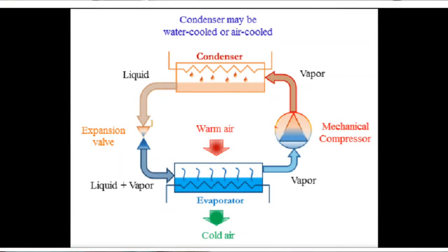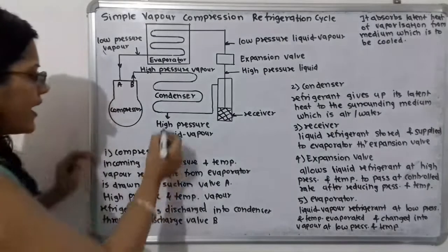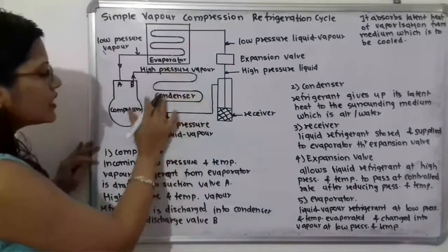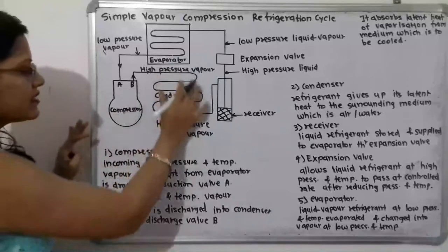In the condenser, the refrigerant gives up its latent heat to the surrounding medium, which is air or water. Latent heat means the heat involved in a phase change. Here the refrigerant is in vapor form, so when it gives up its latent heat, this vapor is getting converted into liquid or a liquid-vapor mixture.